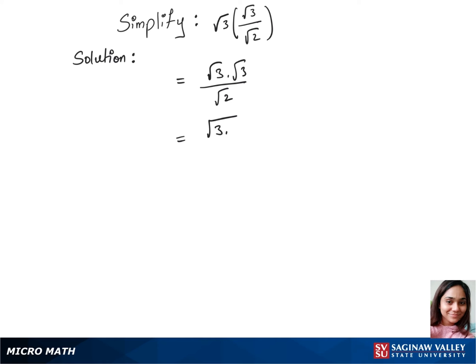Root 3 times 3 over root 2. Now the square root and 3 squared gets cancelled, that gives us 3 over root 2. Let's rationalize this: 3 over root 2 times root 2 over root 2. This gives us 3 root 2...